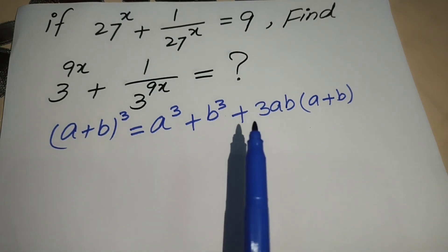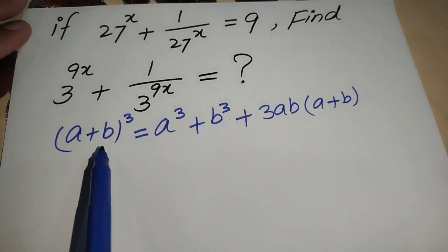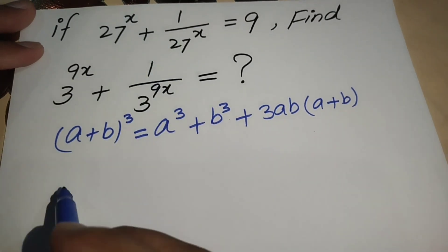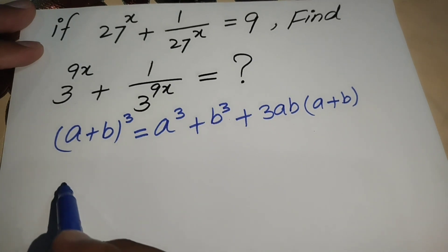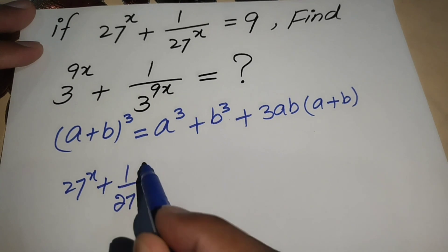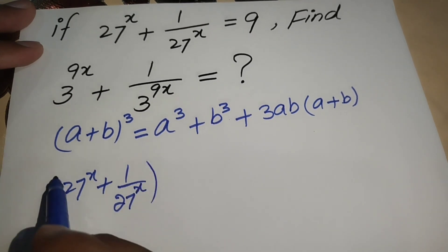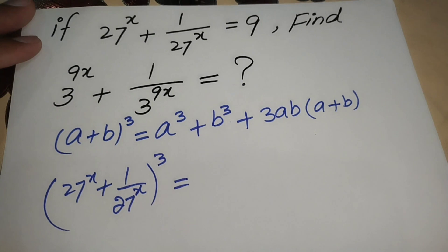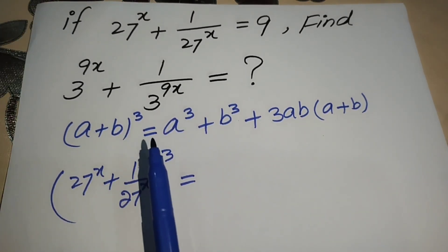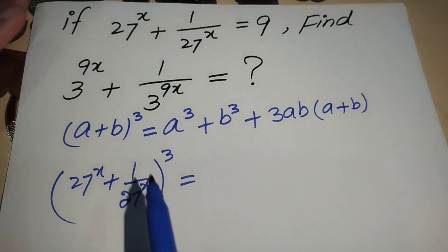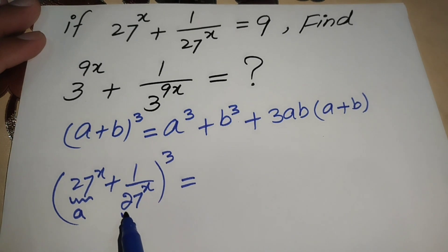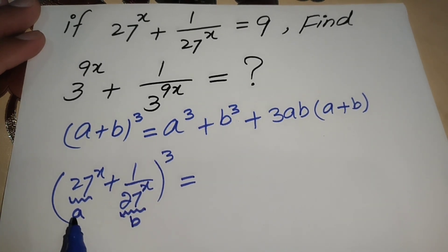Now let's get started. First, we will take the left-hand side of the expression and take the cube of it. Then we apply the cubic formula, identifying this term as a and this term as b.